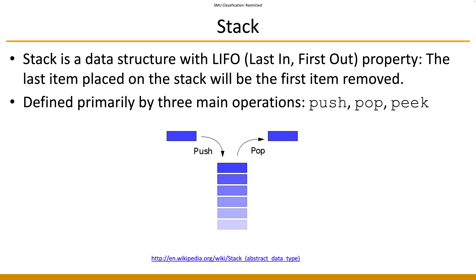We start with the stack — one of the most fundamental and important data structures in computing systems. You may have heard of the last-in, first-out property. That basically comes from this principle where there is only a single point of entry and single point of exit. Looking at this diagram, this is probably the best visual way to illustrate how a stack actually works. We have two operations to alter the content of the stack, and a peek operation to look at the top element.